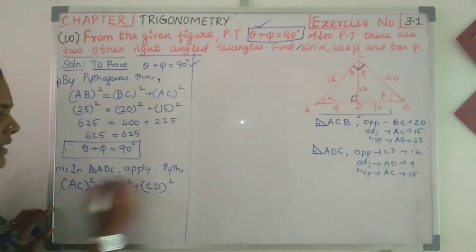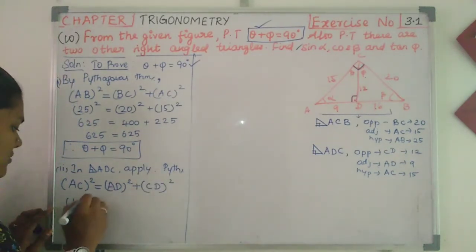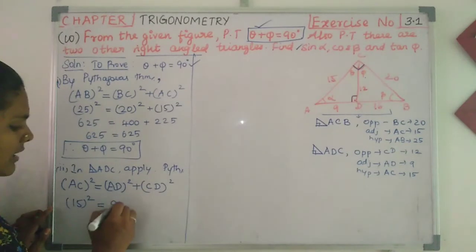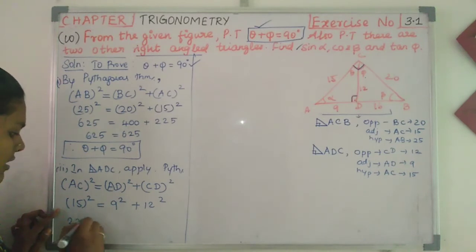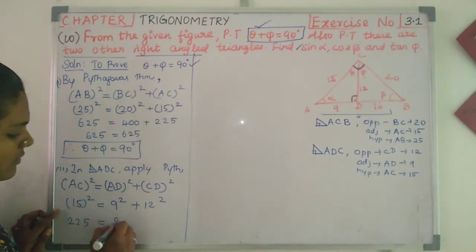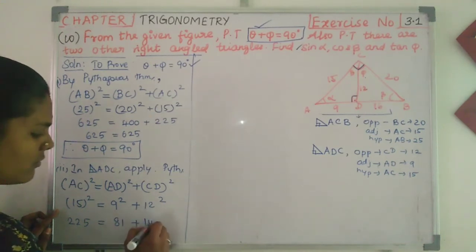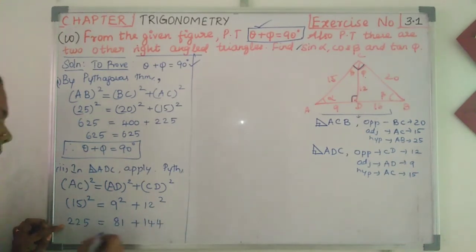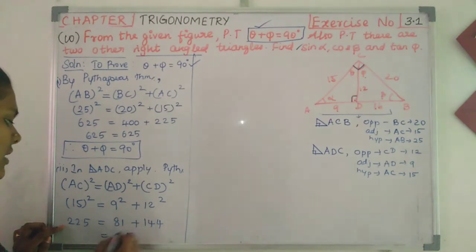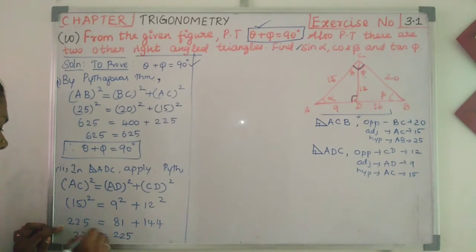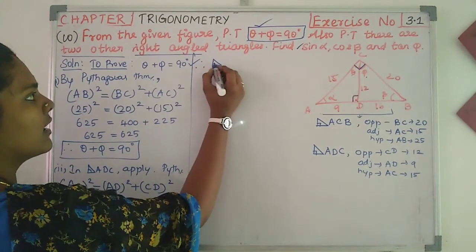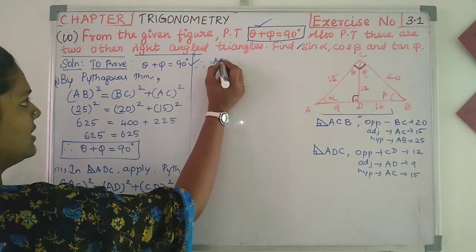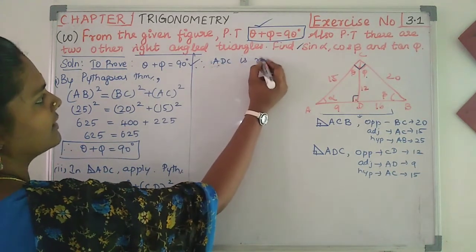AC value is 15. So, 15 squared equals 9 squared plus 12 squared. That gives 225 equals 81 plus 144, which equals 225. Left hand side equals right hand side. Therefore, triangle ADC is a right-angle triangle.